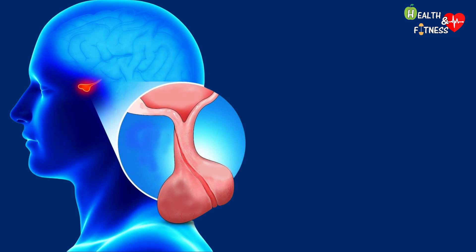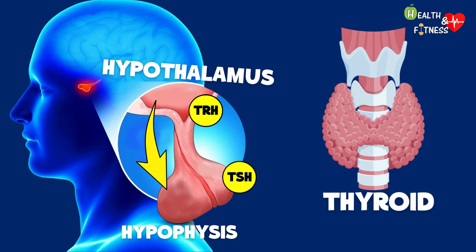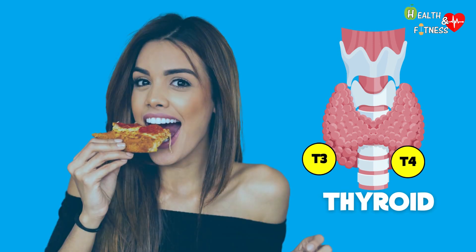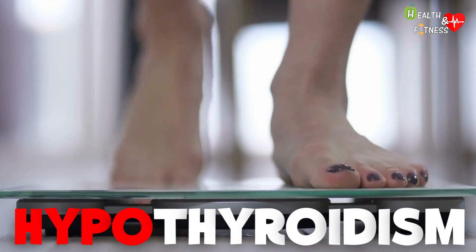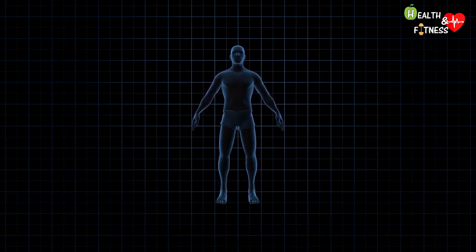The control of thyroid activity takes place by means of the hypothalamic-pituitary-thyroid axis. The hypothalamus releases thyrotropin-releasing hormone (TRH), which stimulates the pituitary gland to produce thyroid-stimulating hormone (TSH), which in turn stimulates the thyroid gland to produce thyroid hormones T3 and T4. According to some studies, T3 and T4 intervene in the regulation of appetite and indirectly on body weight.